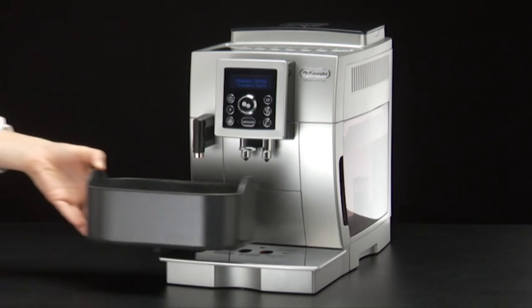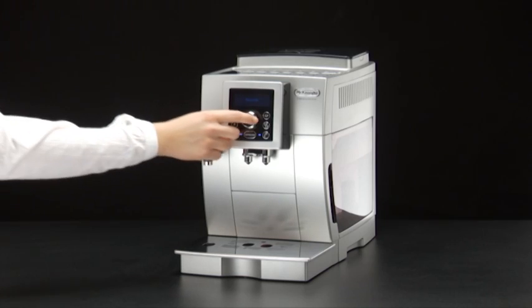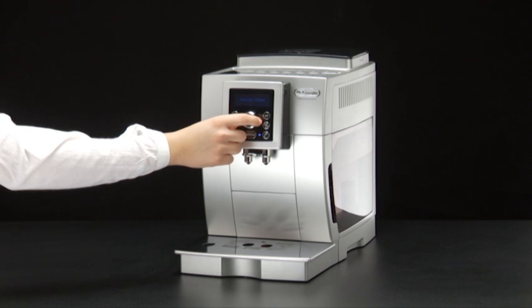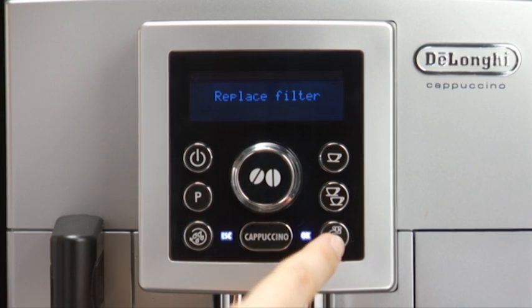Position a container with a minimum capacity of 500 millilitres under the hot water spout. Turn the selection dial until replace filter is displayed. Press the hot water delivery button.